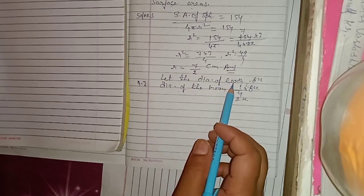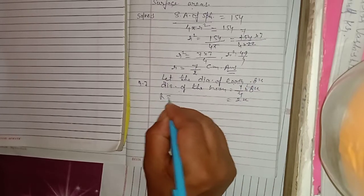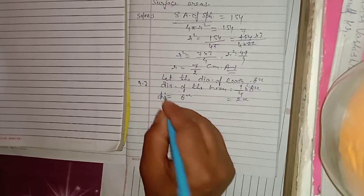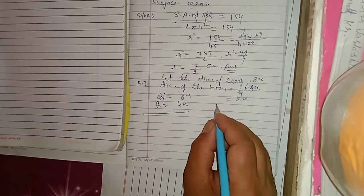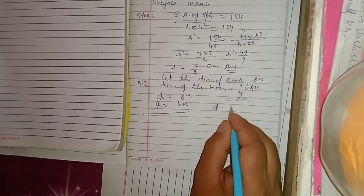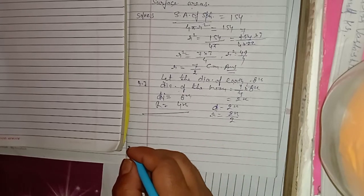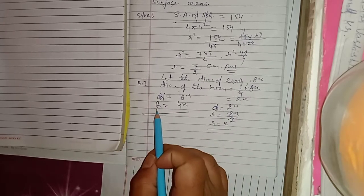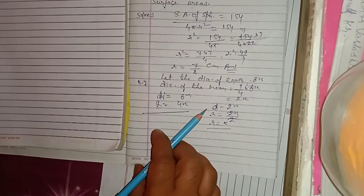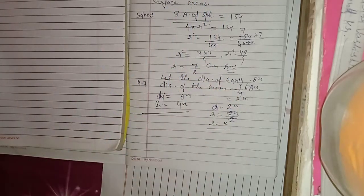The diameter of Earth (8x) is represented by capital R, so radius of Earth = 4x. The diameter of Moon (2x) is represented by small r, so radius of Moon = 2x/2 = x. Earth's radius is 4x and Moon's radius is x. Now find the ratio of their surface areas.